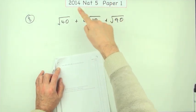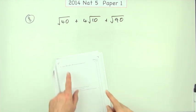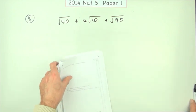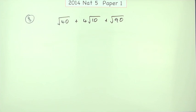Number eight from the first paper of the 2014 National Five, adding surds. Express this sum as a surd in its simplest form for three marks.